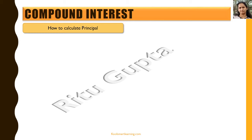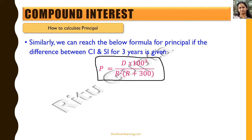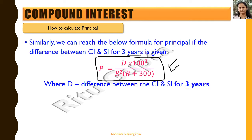Now again we can calculate the principal if we are provided the difference between the simple interest and compound interest for 3 years. This formula is given by P is equal to d into 100 cubed by r squared into r plus 300, where d is the difference between the compound interest and simple interest for 3 years, and r is the rate of interest. It can again be derived in the same way as we did it for 2 years.